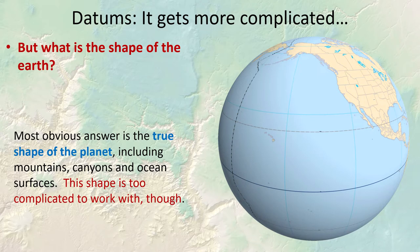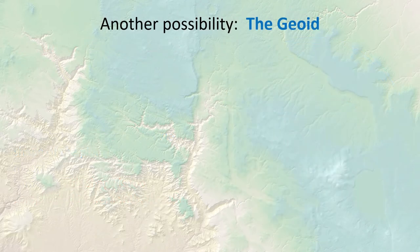The true topographic surface of the planet is so complex it would crash your computer if it tried to reproject that entire shape every time you changed the map frame. Plus it's always changing — every earthquake changes it slightly, tectonic plates are rotating and shifting, and erosion changes the surface. So we look for other options.